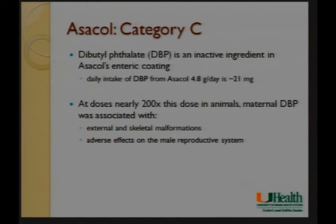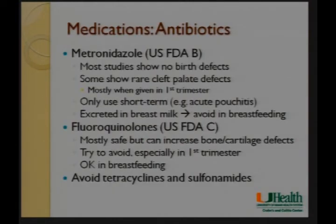The only other category C mesalamine is Asacol, because an inactive ingredient in its coating — DBP — was studied at a dose 200 times higher than what we see with Asacol; at that dose there were some malformations. At the actual dose used in Asacol this is likely closer to category B, but for FDA purposes it remains category C. The key takeaway is that mesalamine therapies are overwhelmingly safe in inflammatory bowel disease.